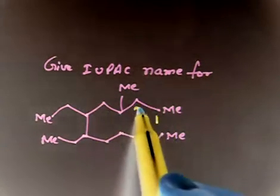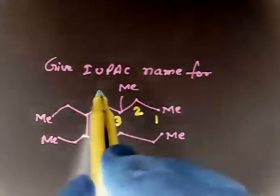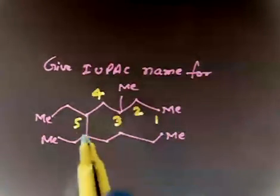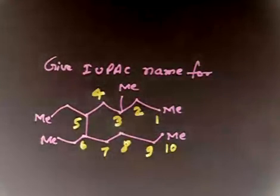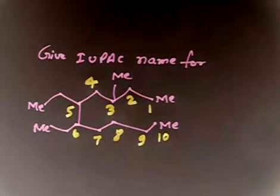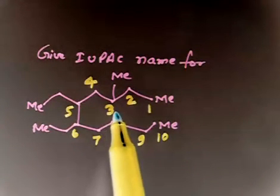So, you will have 1, 2, 3, 4, 5, 6, 7, 8, 9, 10. So, you have 10 carbon. And at carbon number 2, you have a carbon number 3, you have a substituent. 5. So, where you have substituent?